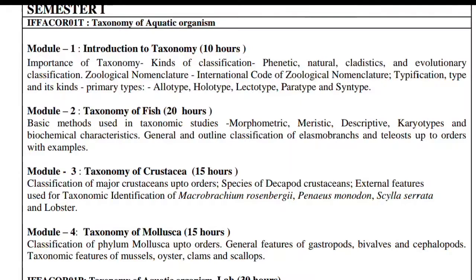Continuing Module 1: typification, types and their kinds — primary types, allotypes, holotypes, lectotypes, paratypes, syntypes, and cenetypes. Now Module 2 covers the taxonomy of fish, which is a very important topic.